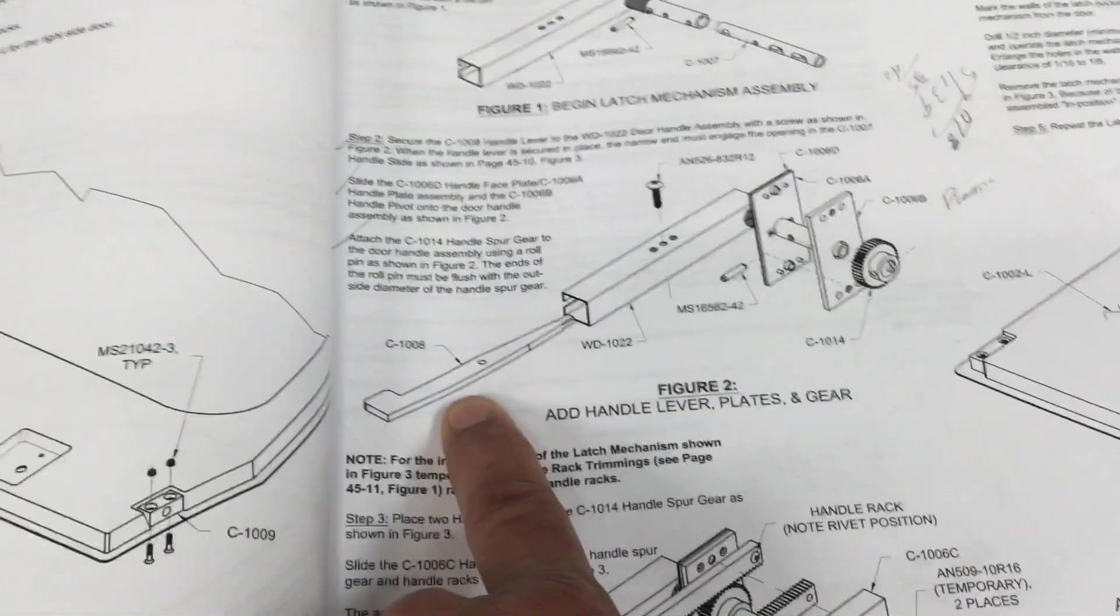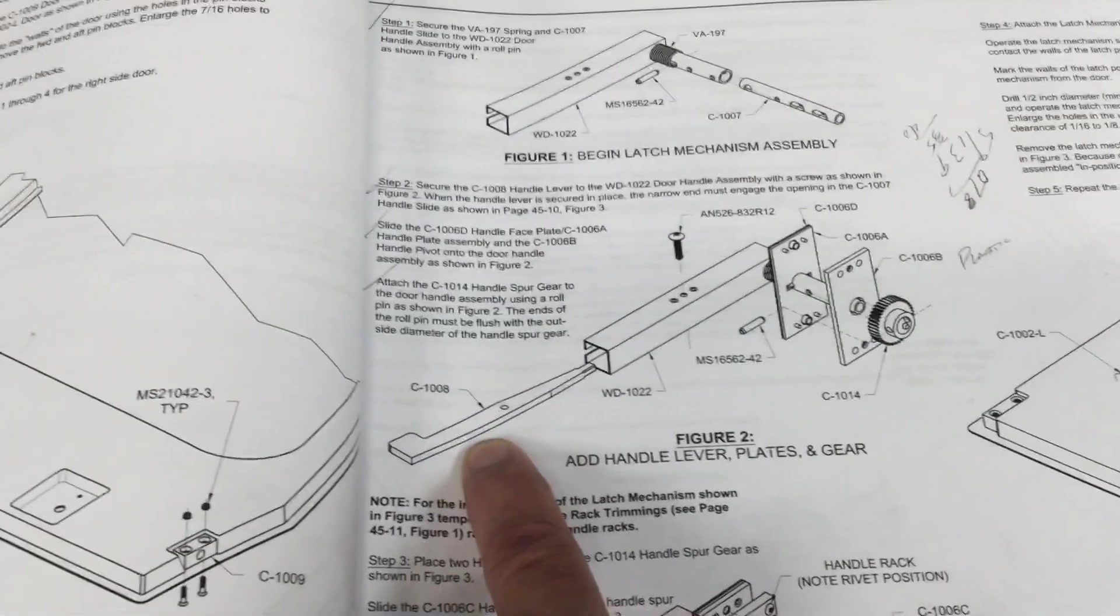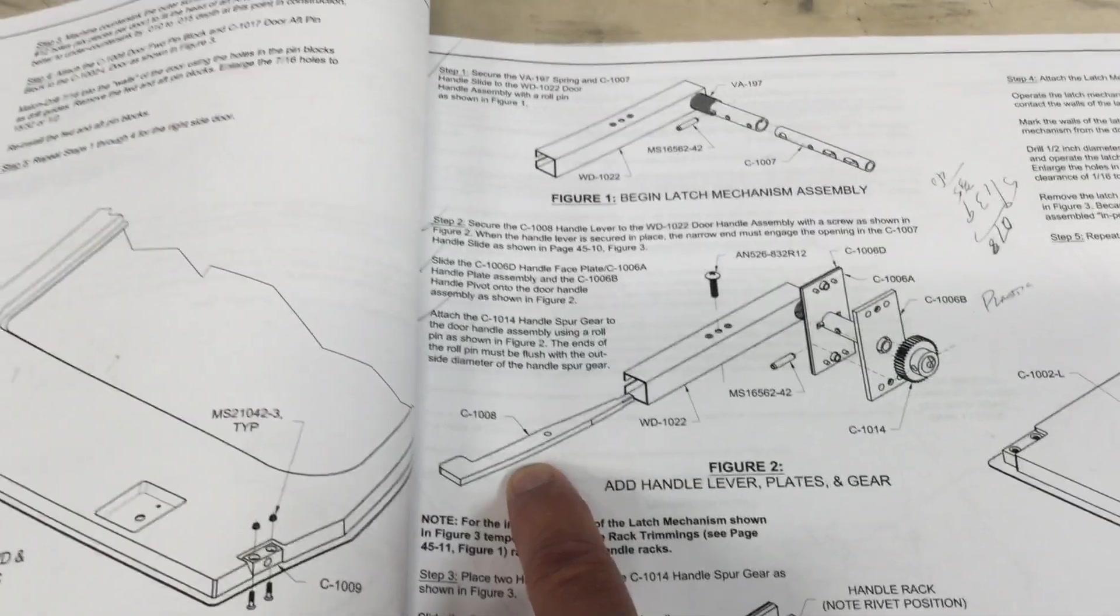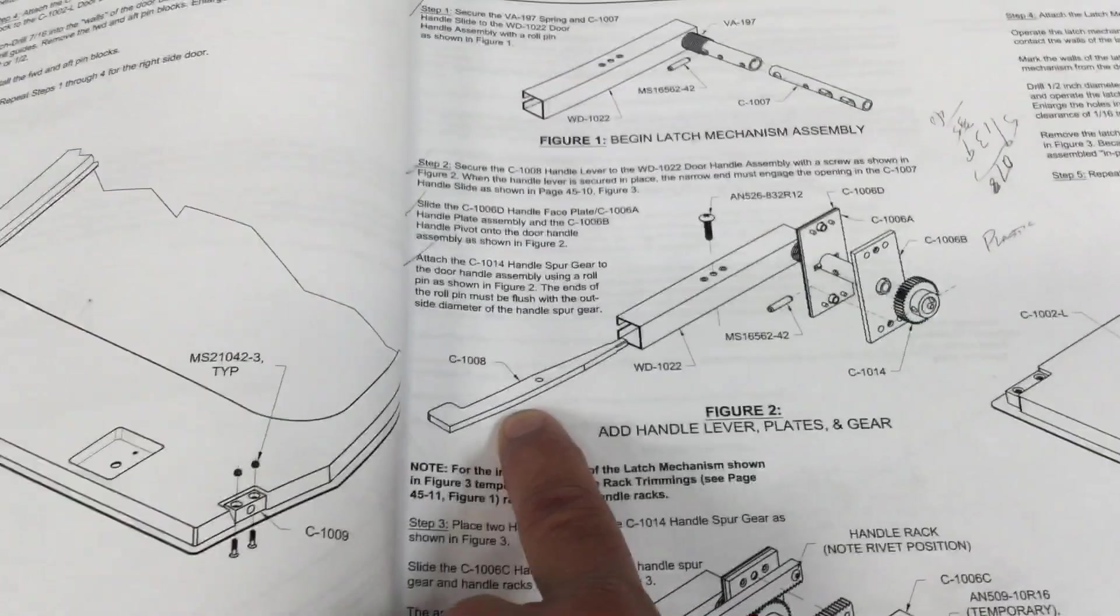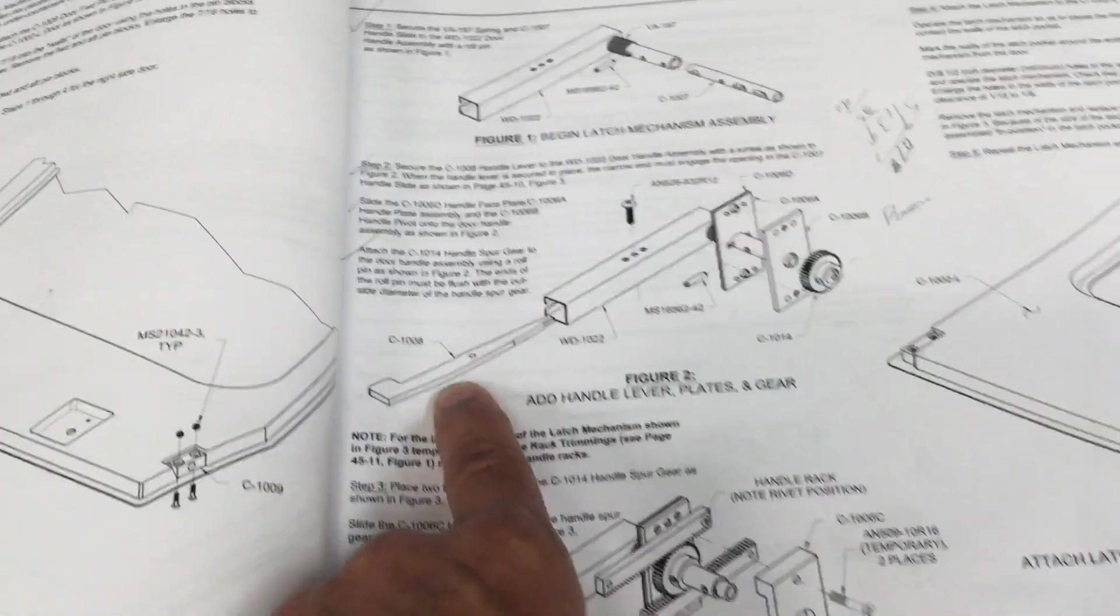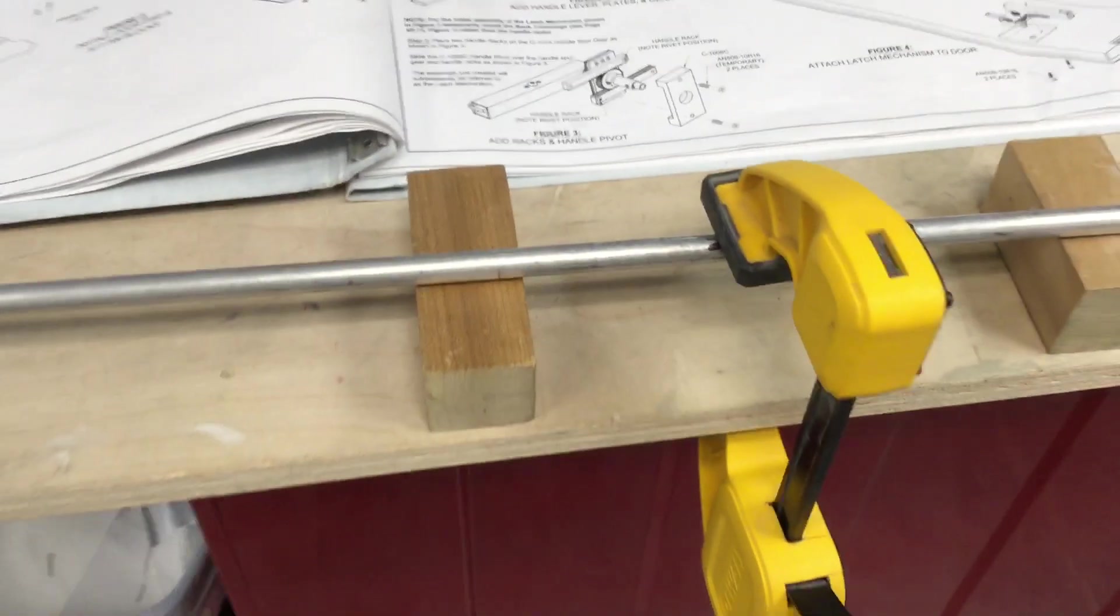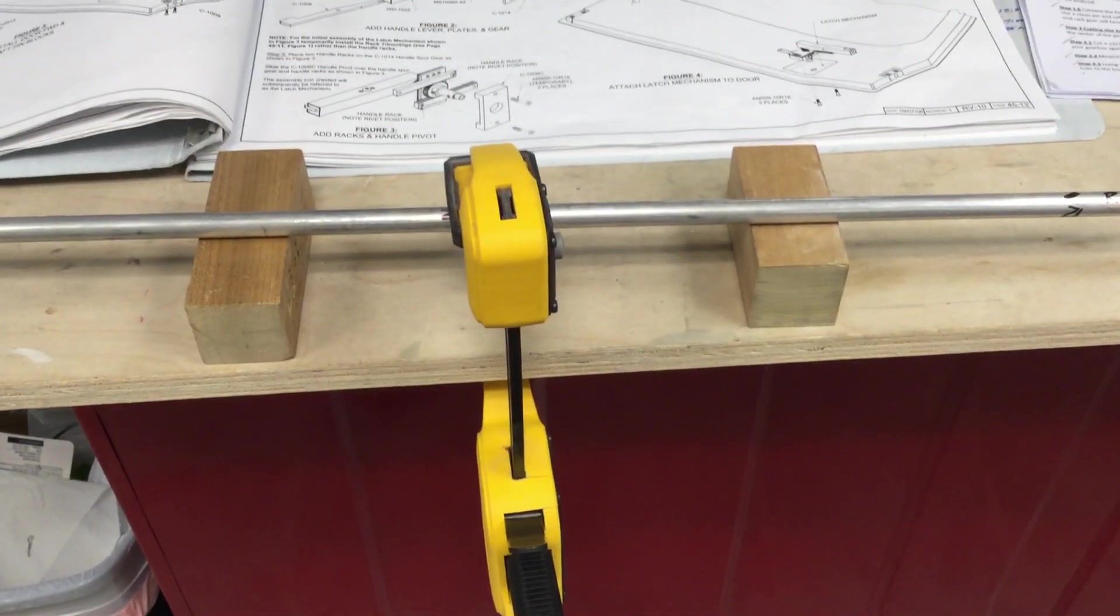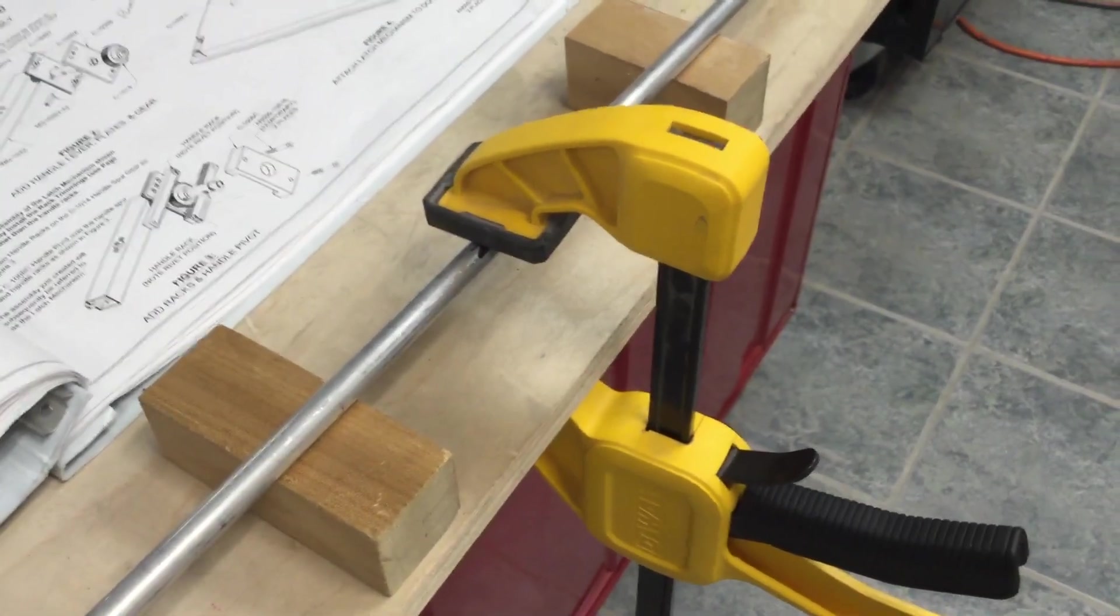Here on 4513, this part C1008 is stamped. You have to smooth and flatten or straighten this part. I did that by placing it on a couple of wood blocks and using a C-clamp to squeeze down and flatten or straighten that piece.